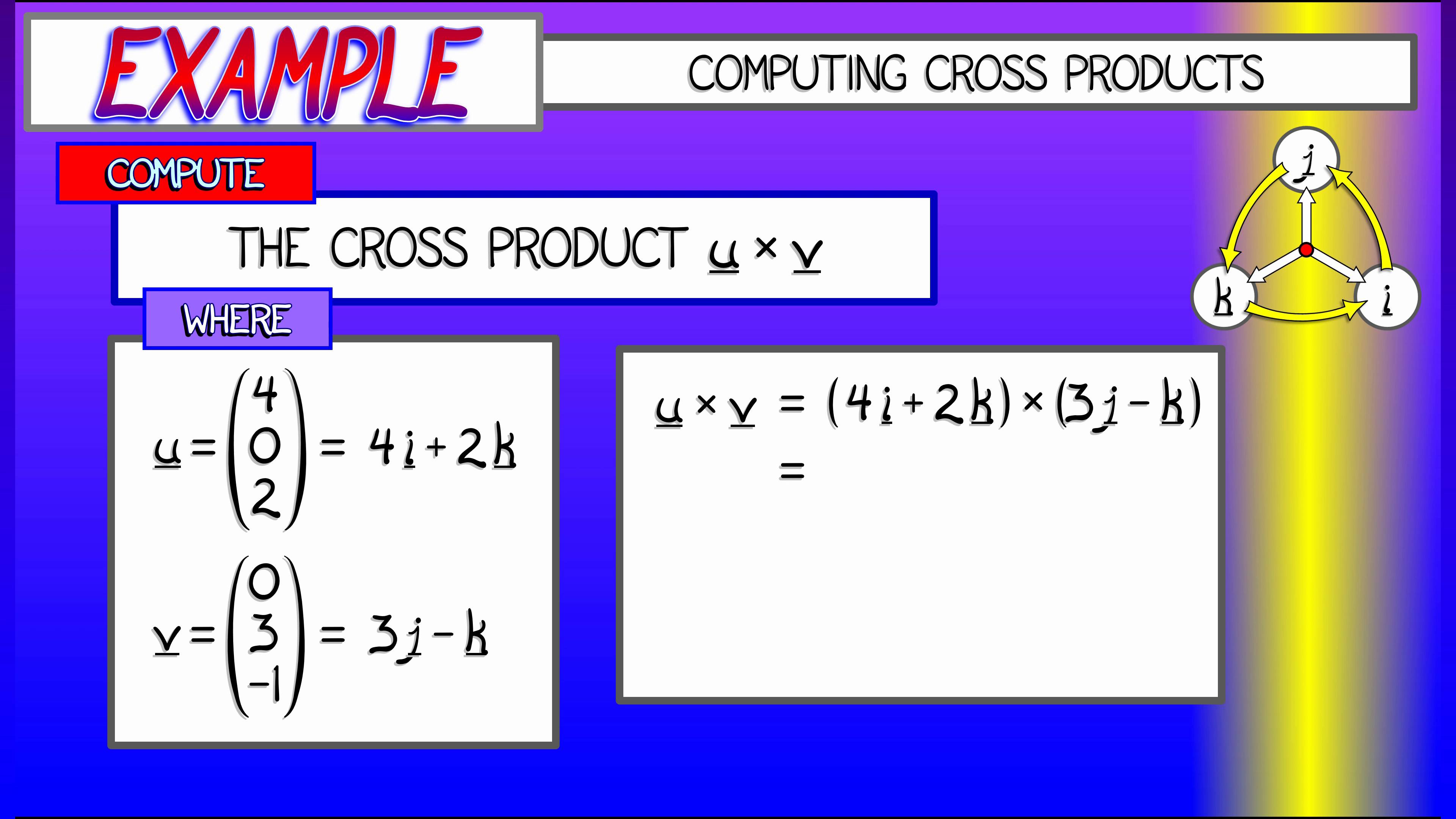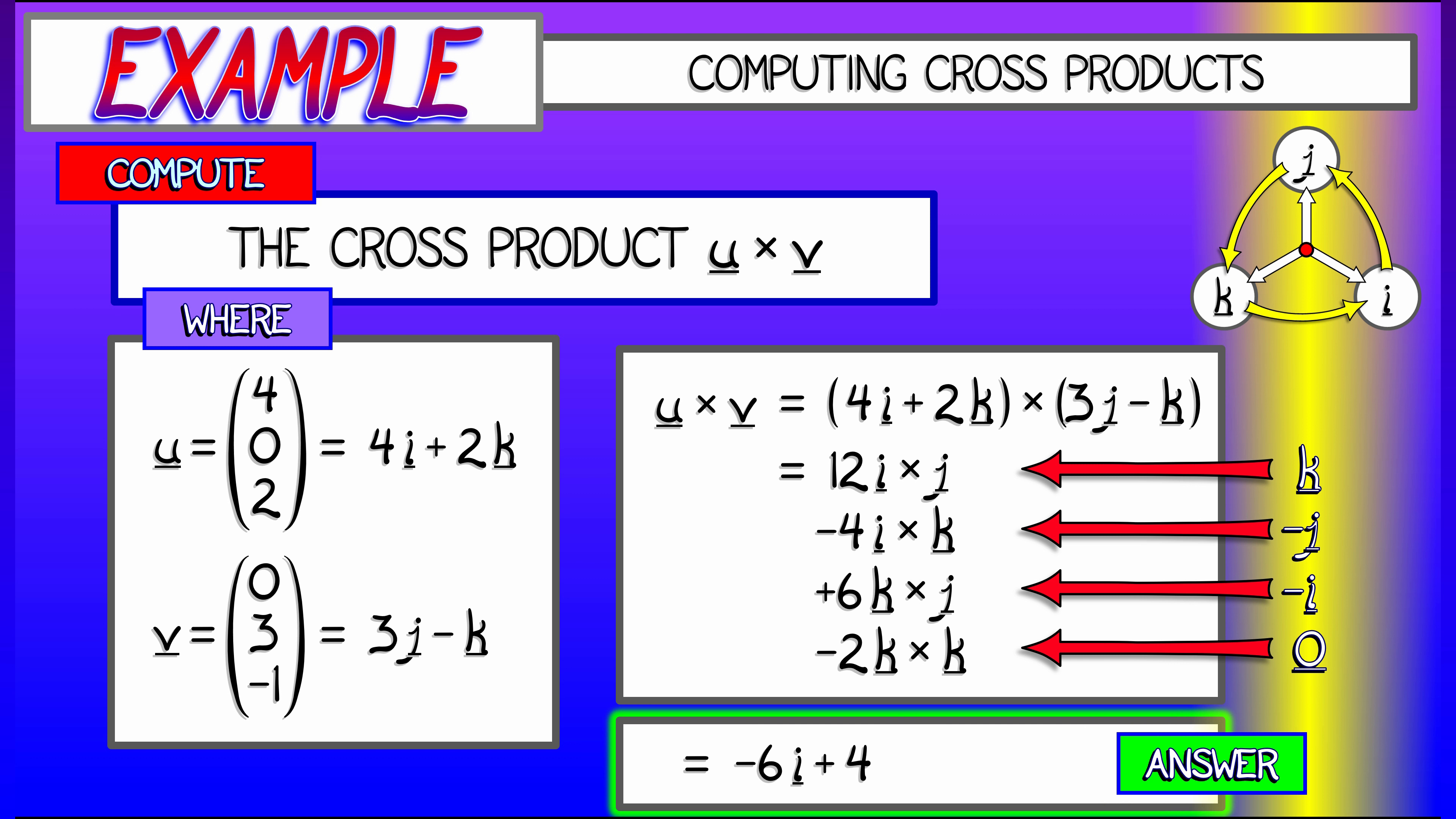But you have to keep track of the terms. i cross j is equal to k. i cross k is equal to minus j. k cross j is minus i, and k cross k, of course, is 0. And then you very quickly and simply get an answer in terms of i, j, k components. This is very simple to do.